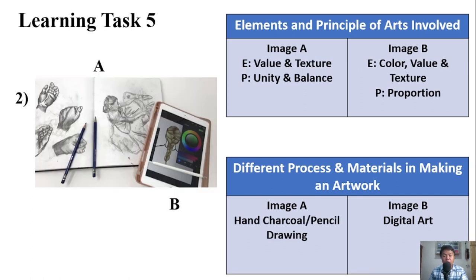Number 2, Image A. For its elements, we have value and texture. For its principles of arts, we have unity and balance. Image B elements: color, value, and texture. For principles: proportion. For different processes and materials in making an artwork — for letter A: hand, charcoal, pencil drawing. For letter B: digital art.